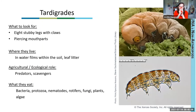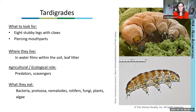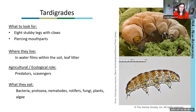Next up are tardigrades. This group also lives in water films and is microscopic. They're best known by their common name, water bears, and they do superficially resemble bears with their stubby legs and long claws, with a lumbering movement. Tardigrades have piercing mouthparts and feed on rotifers, nematodes, fungi, algae, bacteria, and protozoans. Just like rotifers, they enter suspended animation — known as cryptobiosis — when water in the soil dries up, with their metabolism slowing way down and surviving 30 years or more in this state.